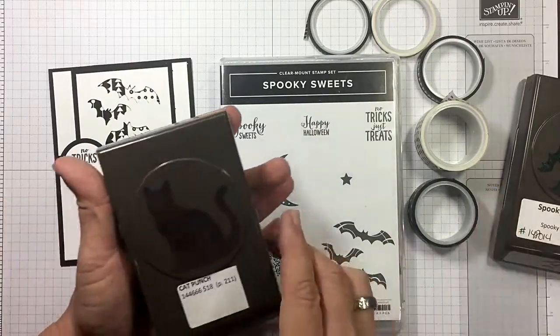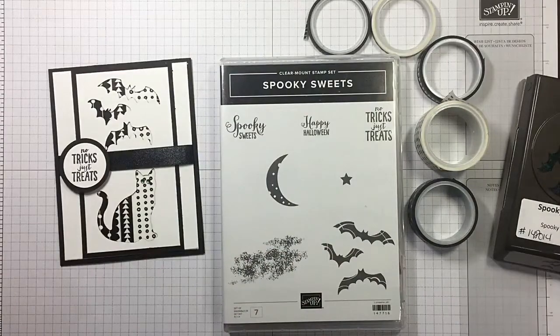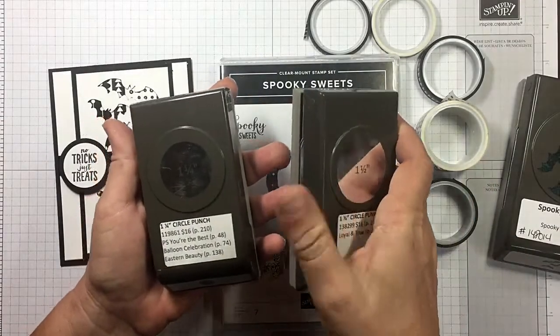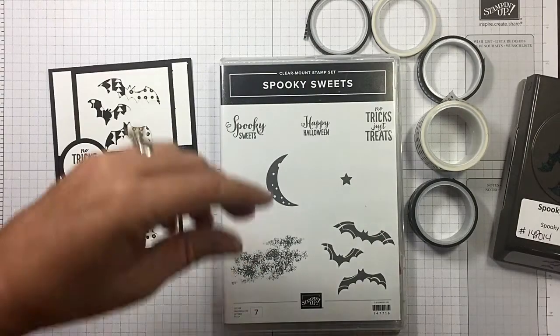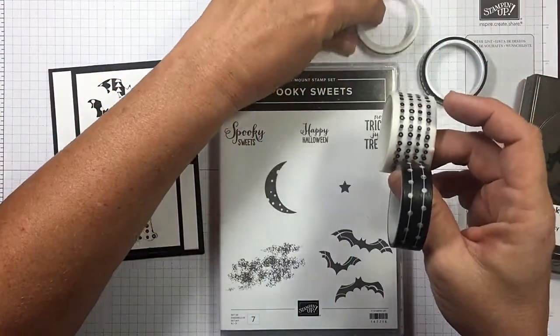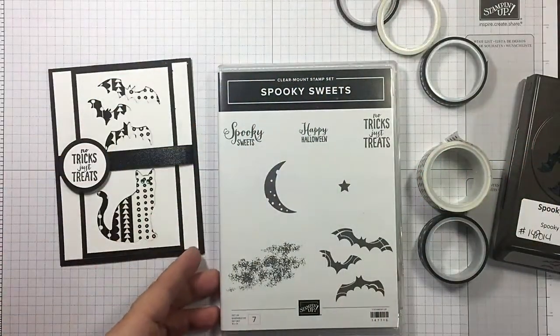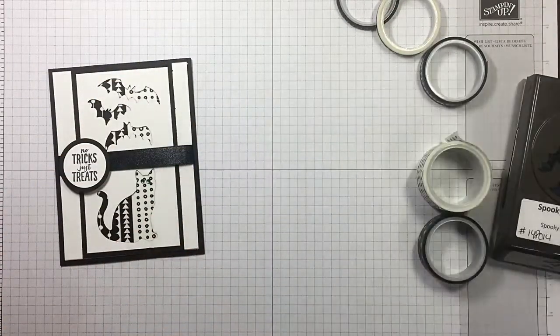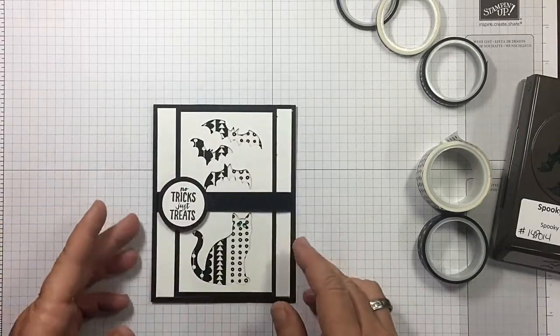You can use these bats for more than just bats. Trust me, I'll have more cards coming with that. I'm also using the Cat Punch, love it, and the one and a half and one and a quarter circle punch. I'm grabbing our washi tape, our pick-a-pattern washi tape, and I'm going to be using the new black foil along with some of our glimmer paper. So we're going to change this card up just a little bit.